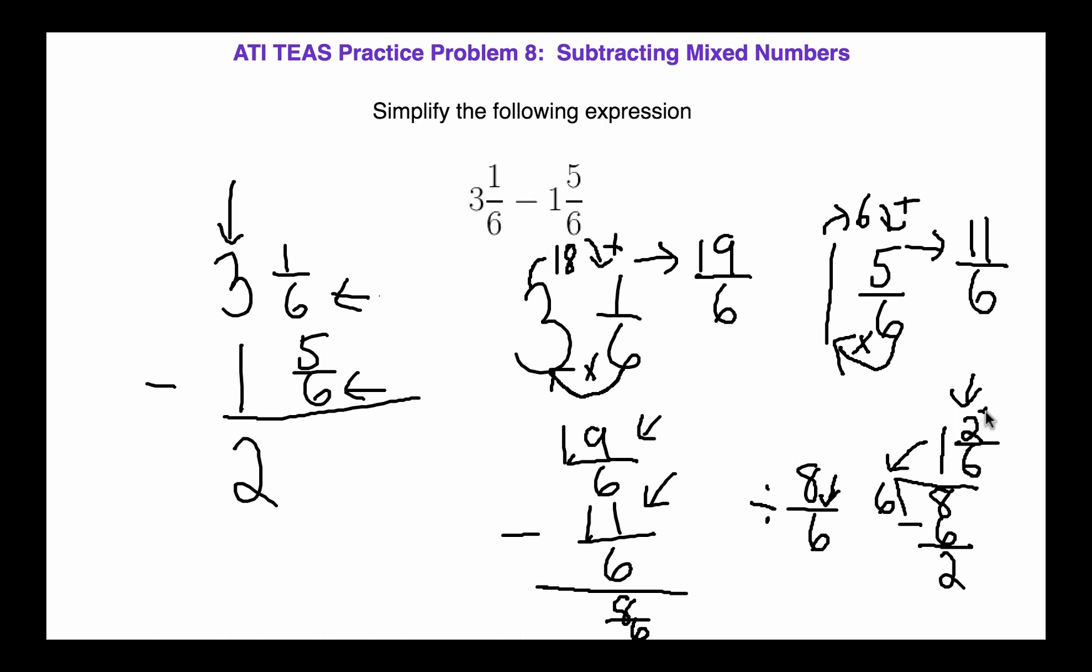Once we do that, what do we get? 1 over 3. So our final answer is 1 and 3 thirds. So we're going to put our answer up here. Not 1 and 3 thirds, guys, 1 and 1/3. My bad.